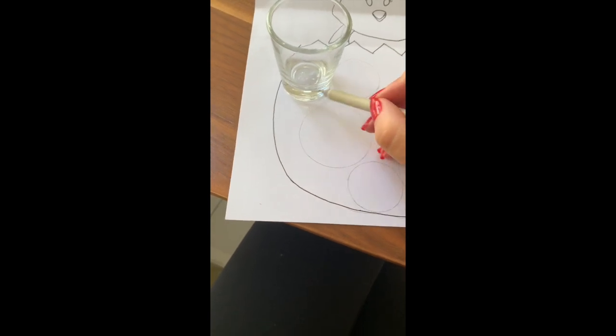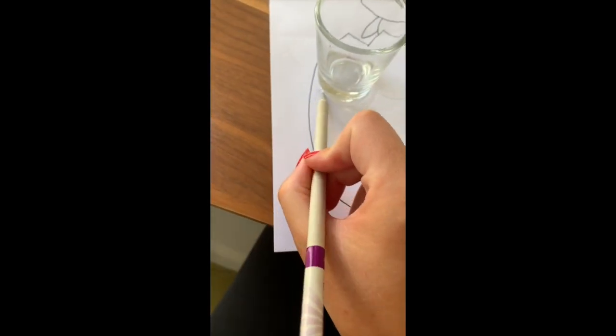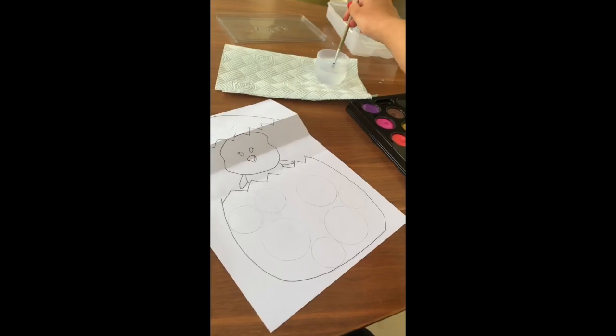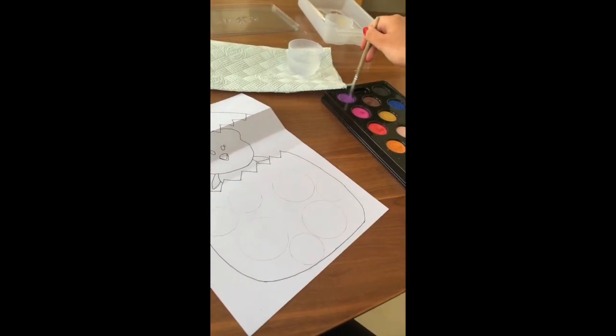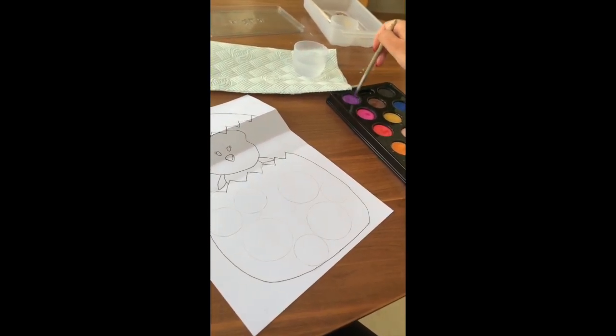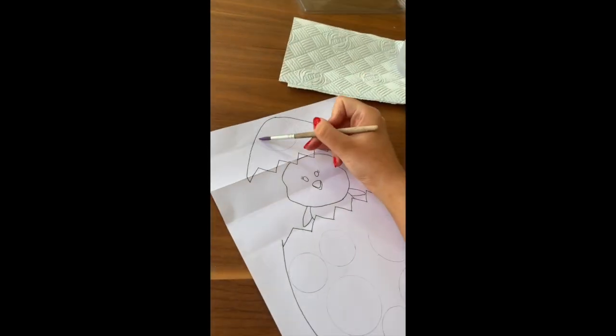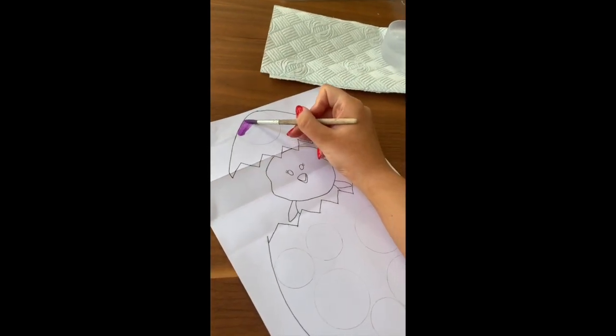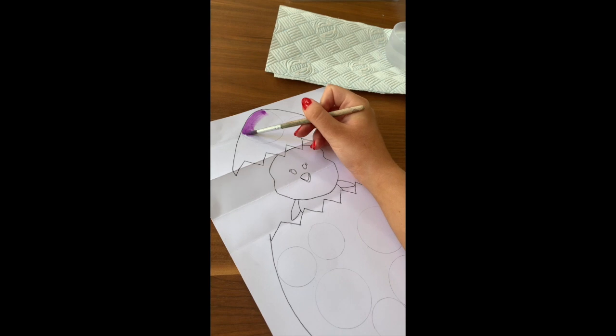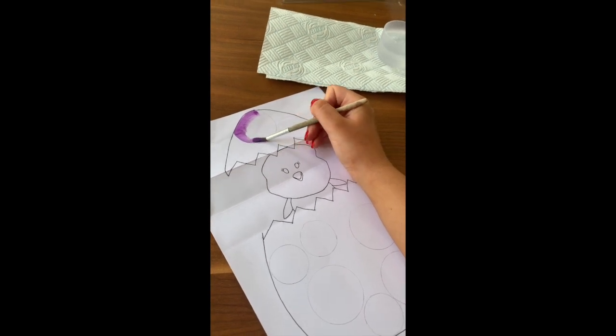I'm using a small glass to do some decorations on my egg and then I'm going to start painting. You can do painting, coloring with pencils or crayons, or whatever you want. I just wanted to use painting because it was my preference, but you can use whatever you want.